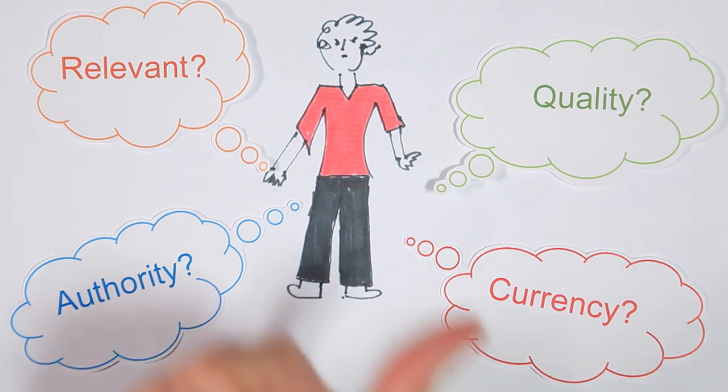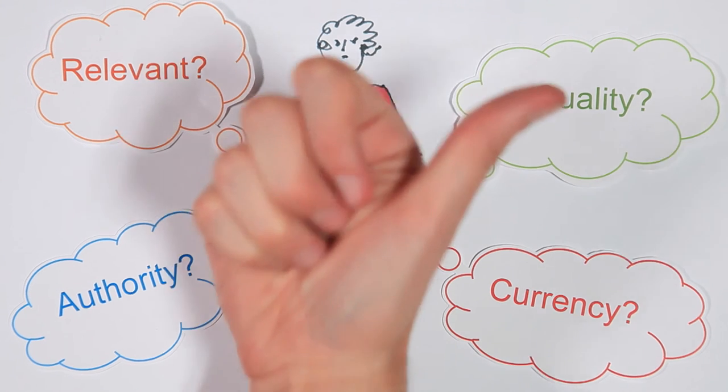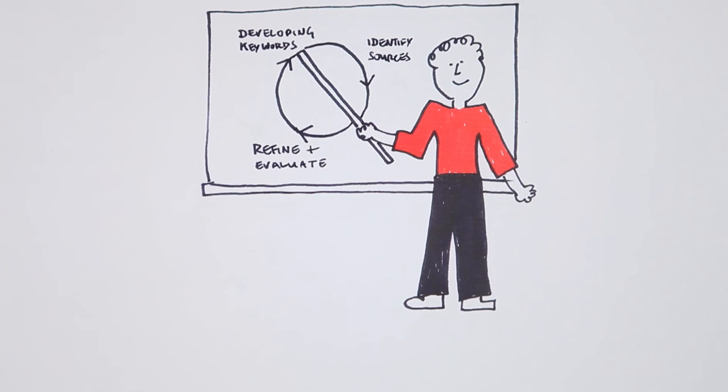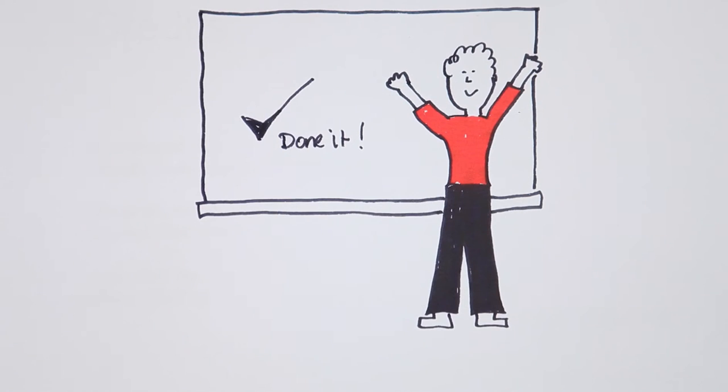Dave now has got some good information for his assignment. But the process is circular. And Dave can repeat this until his research is perfect.